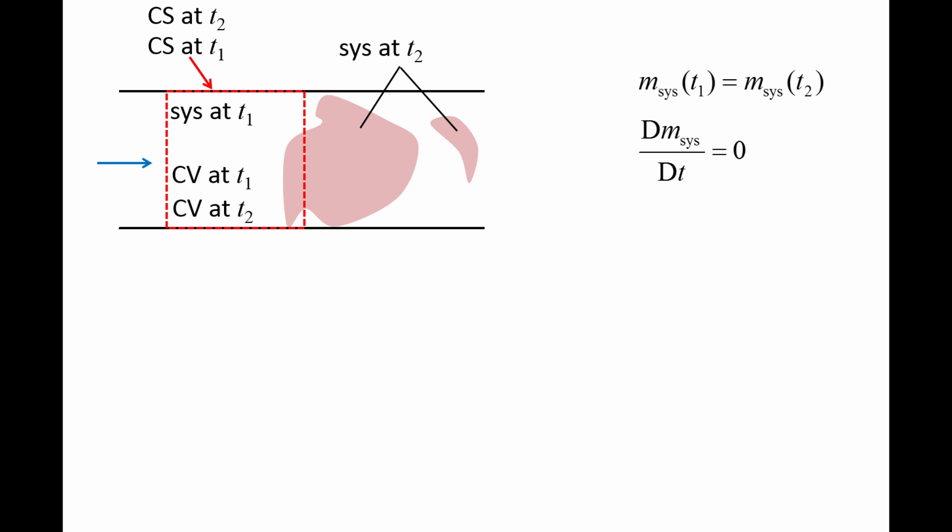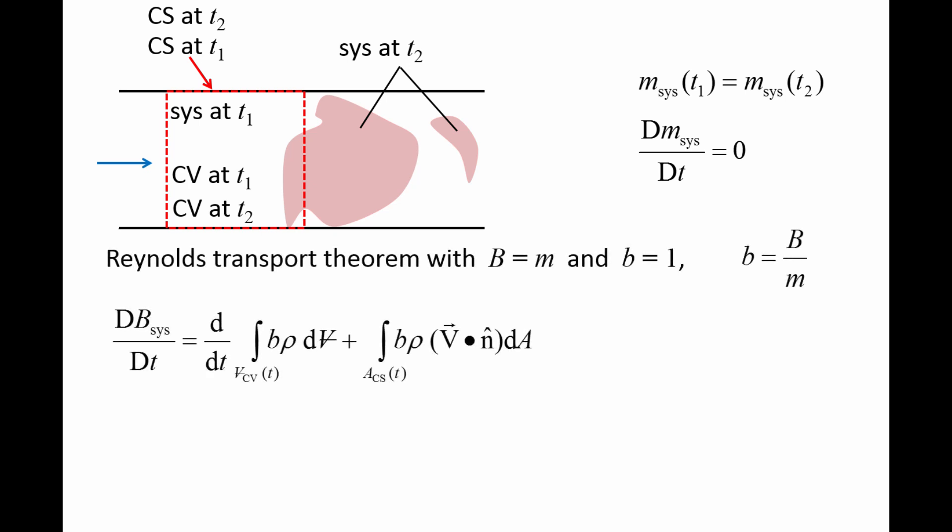We will use capital D in the time derivative to indicate that we are taking the system point of view in describing the conservation of mass equation. In order to convert the conservation of mass equation for a system to a control volume, we utilize the Reynolds transport theorem, where the extensive property capital B is the mass and the corresponding intensive quantity, lowercase b, is one.